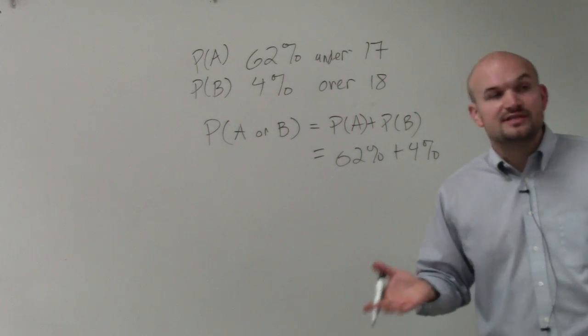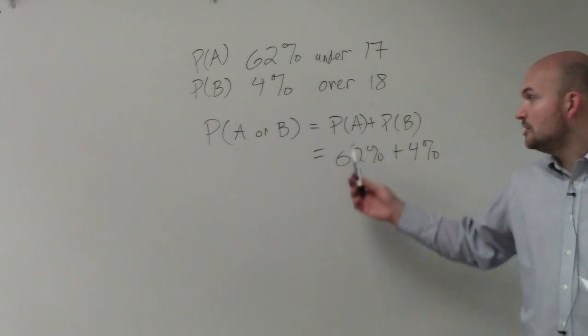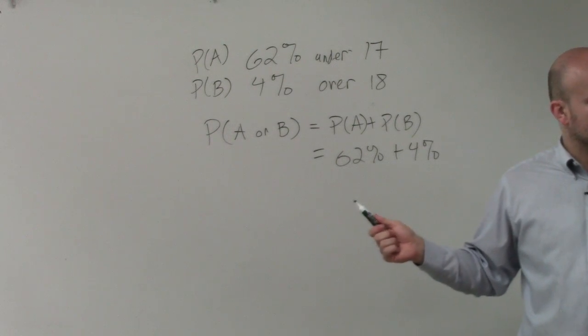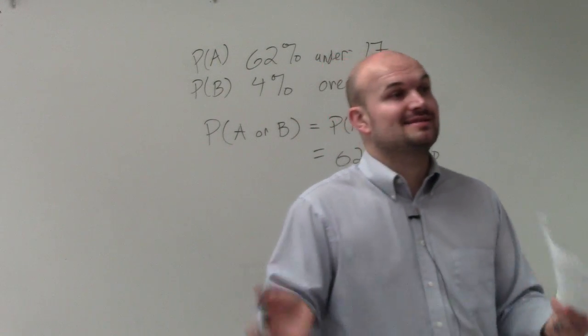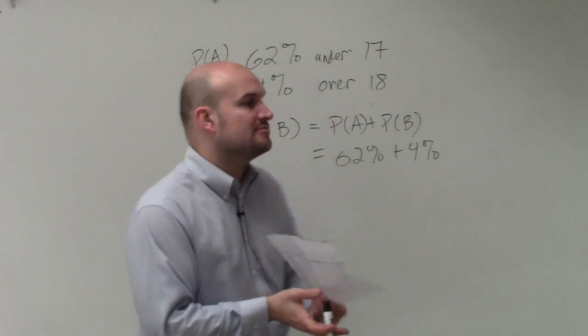So the main important thing is understanding when you have mutually exclusive events, you're just going to add the two probabilities. OK? If they're not mutually exclusive, then we would add the two probabilities and subtract the AND, if you guys remember that formula as well.